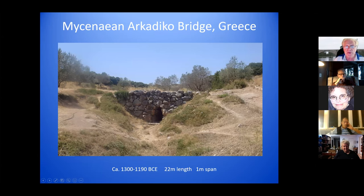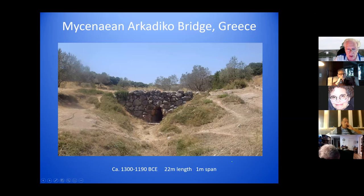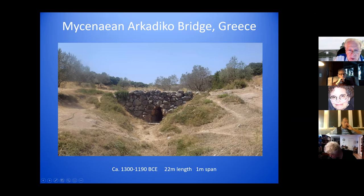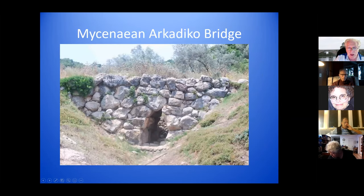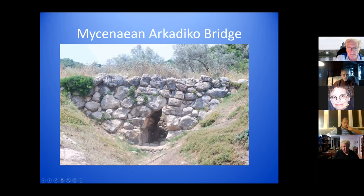Here's a bridge built probably somewhere between 1300 and 1190 BCE. It's 22 meters long, all built from stone. It doesn't look like these are angled stones the way shown in the earlier picture, but here's the center stone and the whole thing is rigid. The reason for building this was probably just so passersby did not have to go through this lower level ground; there may have been water through here at some point.